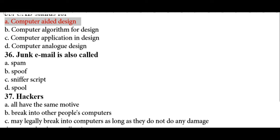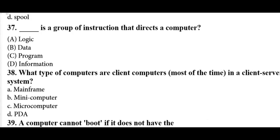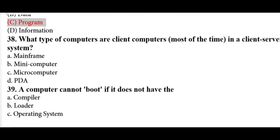Junk email is also called spam — all junk emails are stored in your spam folder. A program is a group of instructions that directs a computer — the correct answer is option C.